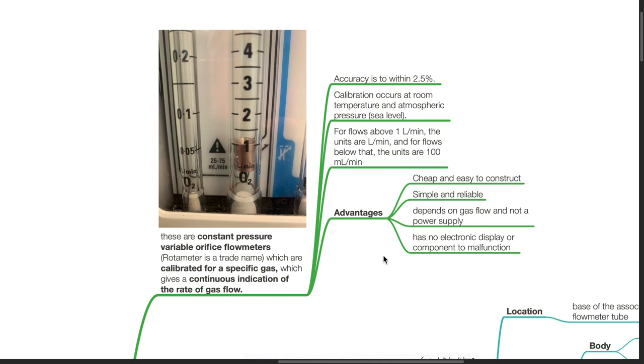Rotameter is a trade name. They are accurate to within 2.5%. Calibration occurs at room temperature and atmospheric pressure at sea level. For flows above 1 liter per minute, the units are liters per minute and for flows below that, the units are 100 mls per minute.